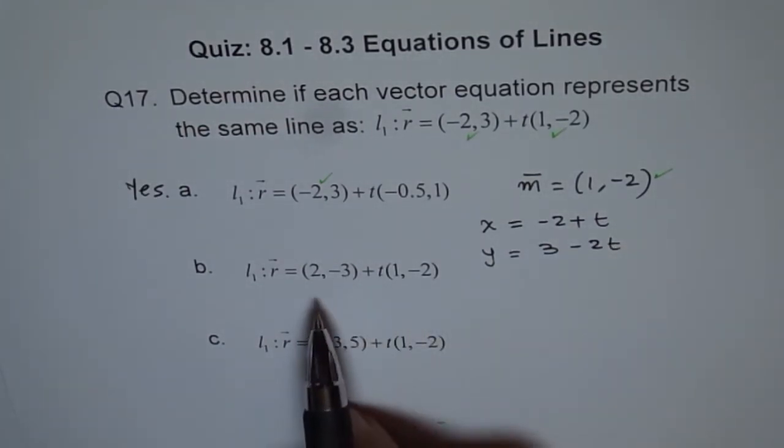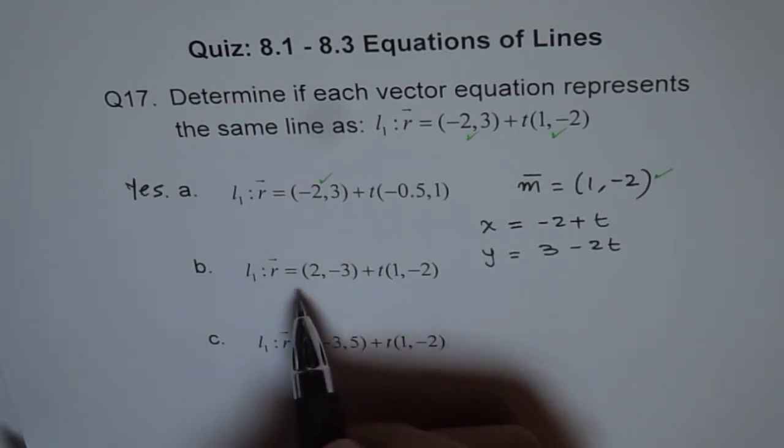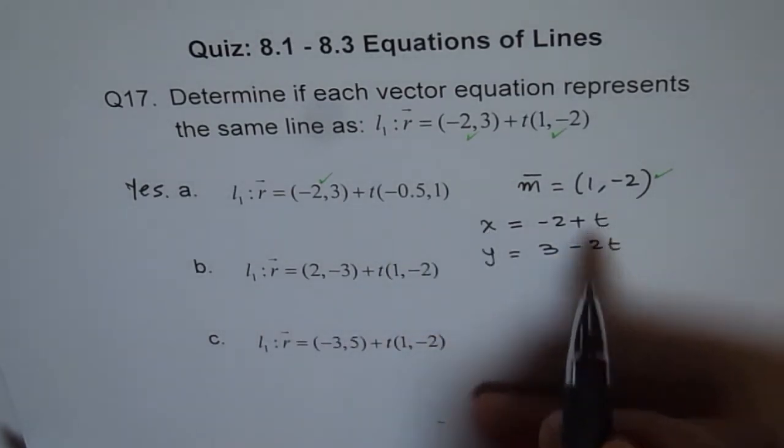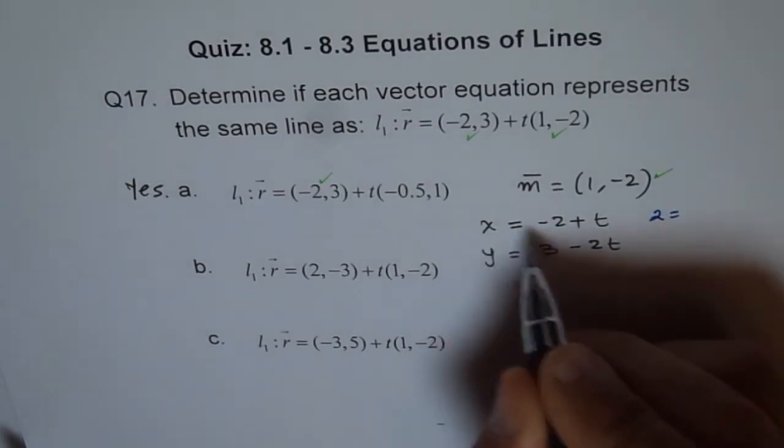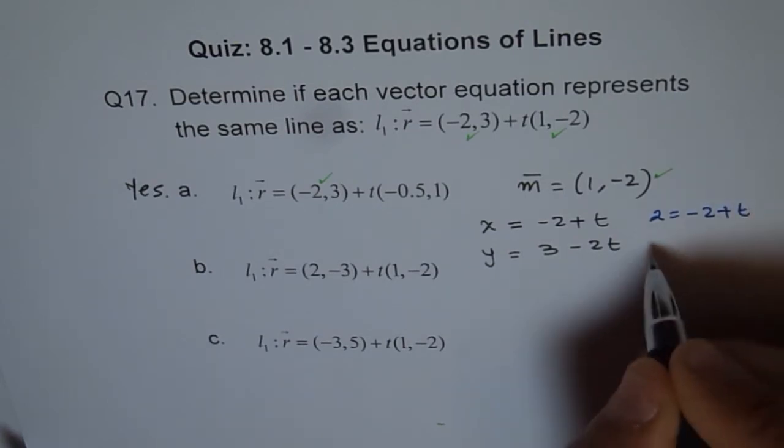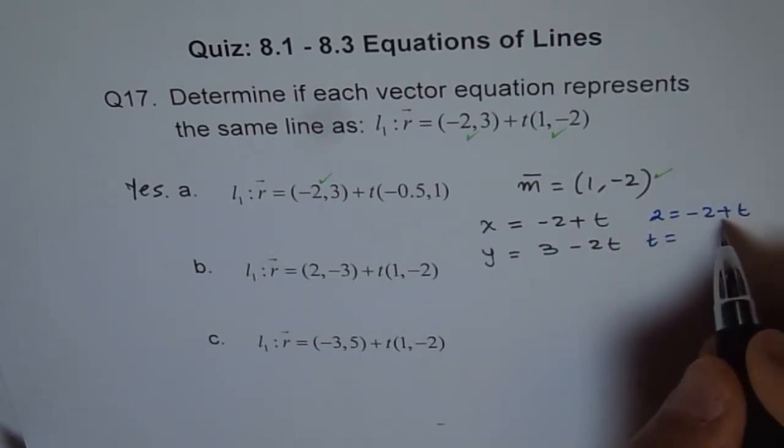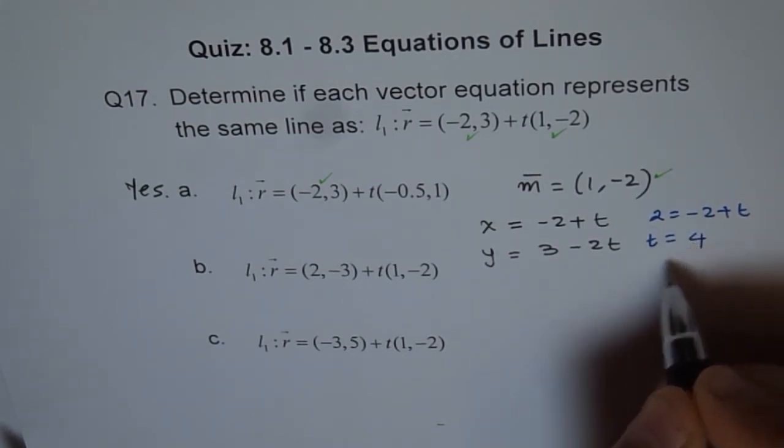Now you want x of 2. We'll do it in a different ink here. So we want x of 2. So if 2 lies here, find the value of t. So we say, well, if 2 lies here on x, then the value of t should be minus 2 plus t, and that means t equals to 4.